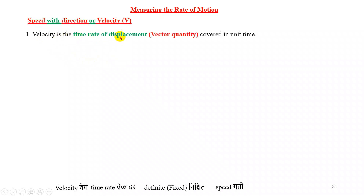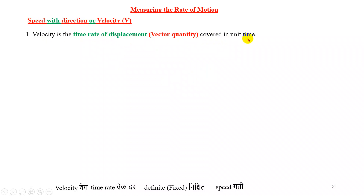Velocity is the time rate of displacement covered in a unit time. It is the time rate of displacement. Instead of velocity, speed without direction means time rate of distance without direction covered in a unit time. But for velocity, we say time rate of displacement covered in a unit time.